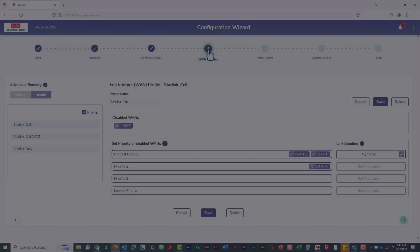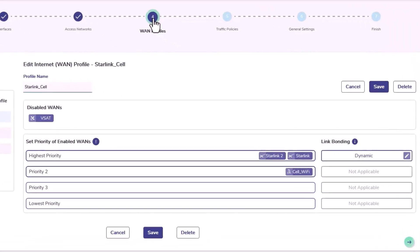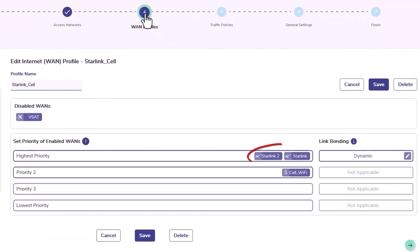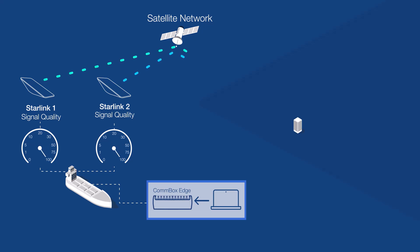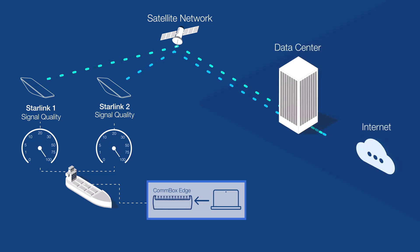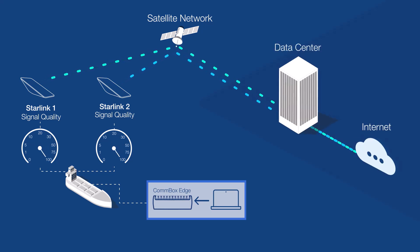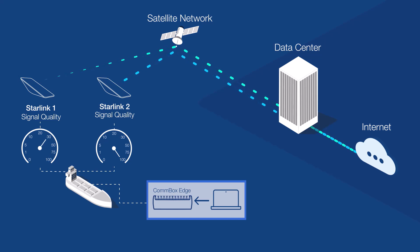In a dual Starlink configuration, your two Starlinks are bonded together to maximize efficiency, reliability, and performance. Data packets are distributed dynamically based on the quality of each connection. And if one Starlink goes down, no packets are lost — they're immediately diverted to the healthy one until the problem resolves.